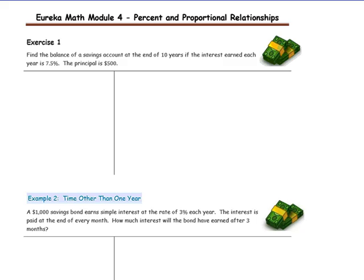For each problem, start by writing the formula I equals PRT, then identify what each of those variables is. I stands for the interest, which is what we are going to be finding, so that is our question mark for now. P stands for principal, which is the amount that you are investing — in this case, $500. R stands for rate, which is the percent you earn per year: 7.5%. When you use it in a formula, remember to use the decimal, so in this case it will be 0.075. T stands for time, and time is measured in years, so time in this case is 10 years.